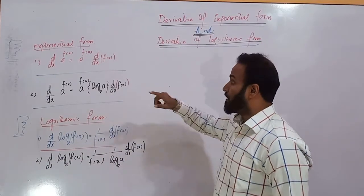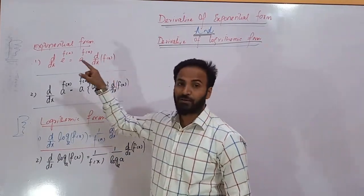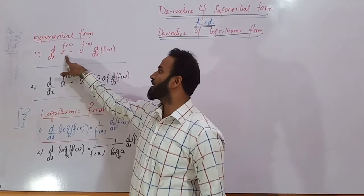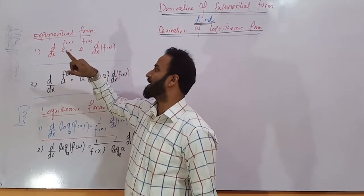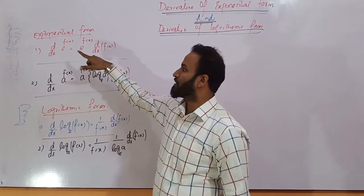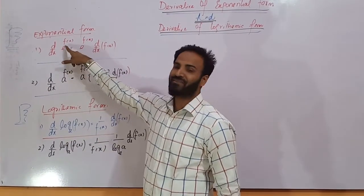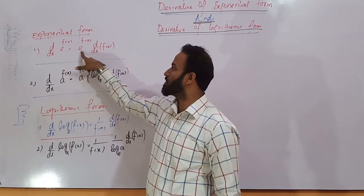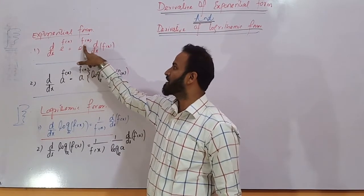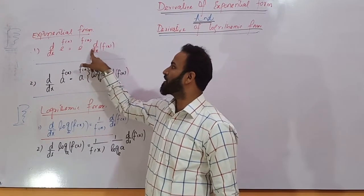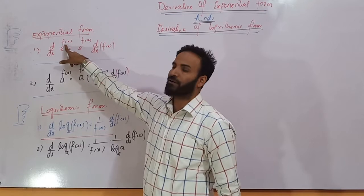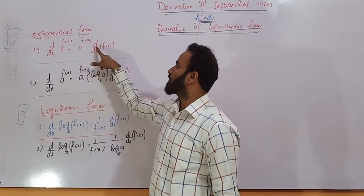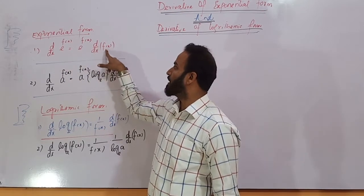First of all, I will tell you how you can take the derivative of the exponential form e raised to power f(x). The derivative of e raised to power f(x) is, as it is, e raised to power f(x), multiplied by the derivative of the exponent, that is f(x).